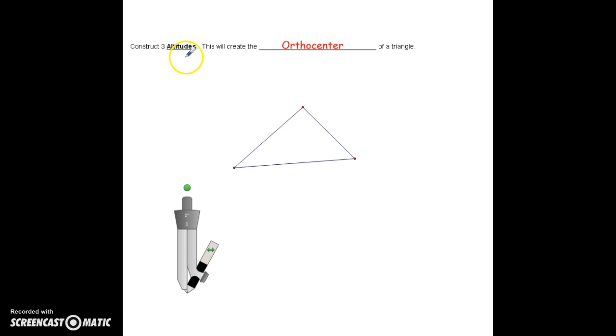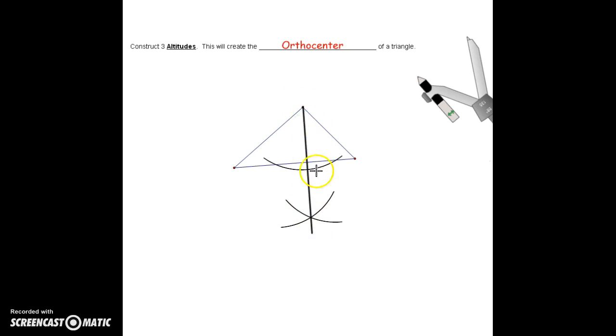The last one for today is the orthocenter. This is a point of concurrency that's created by constructing the three altitudes of a triangle. Remember, an altitude is when you have that perpendicular. We have to start at an opposite vertex and go across to the side opposite. Create an arc that hits twice, and then using the intersection points, create two more arcs that intersect. Use your straight edge to connect the vertex down through the intersection points. That would be your altitude right there.